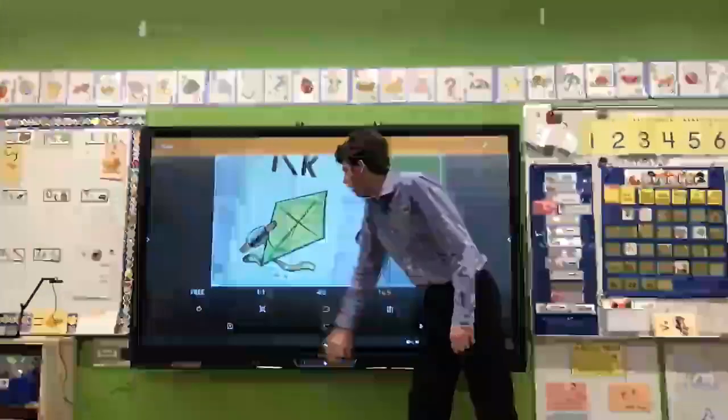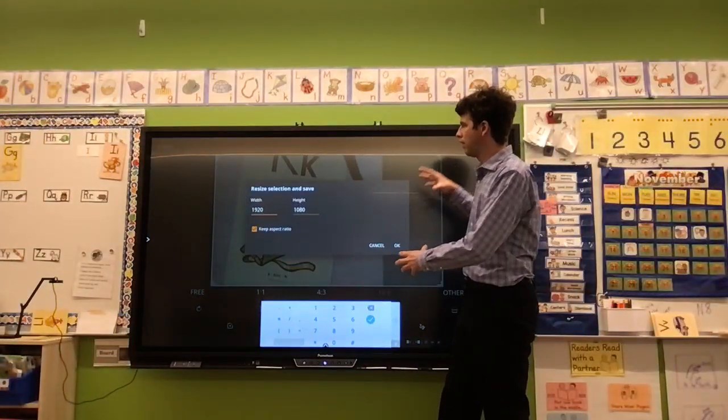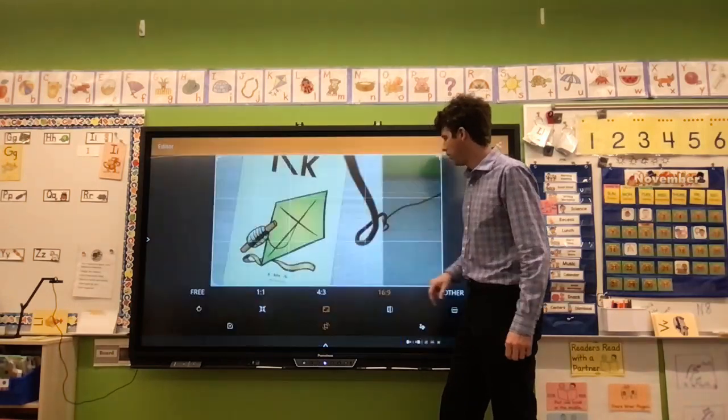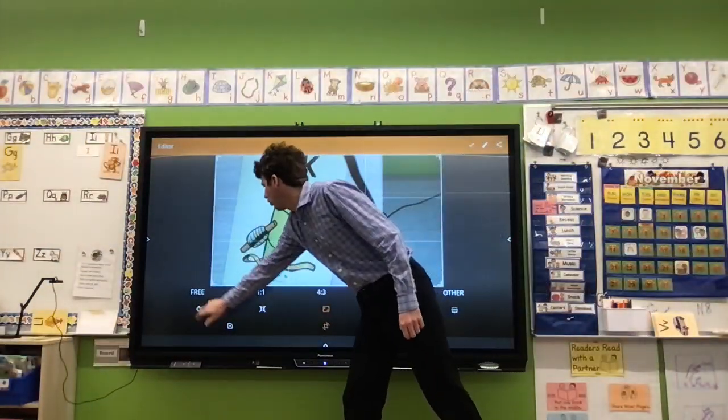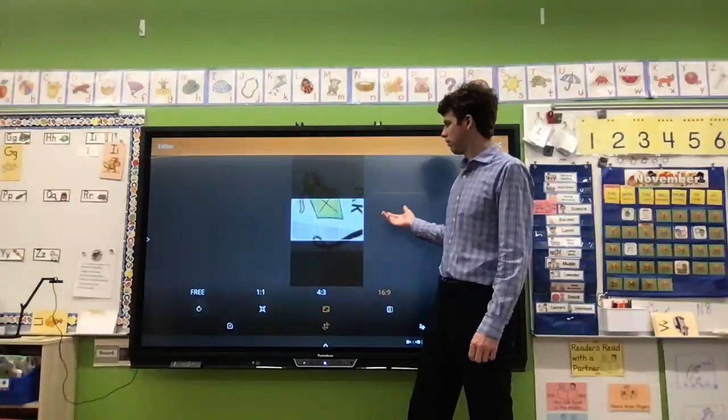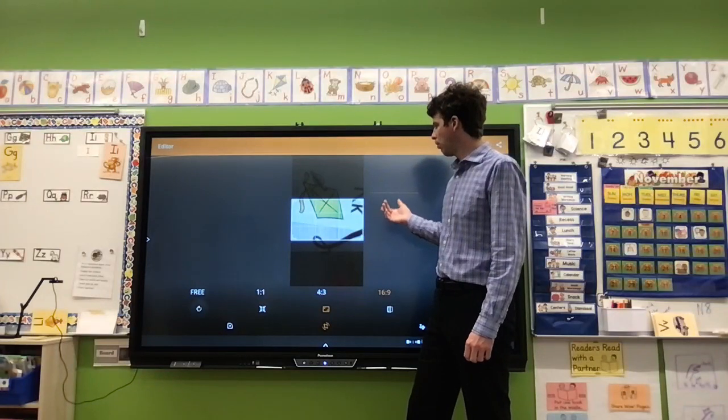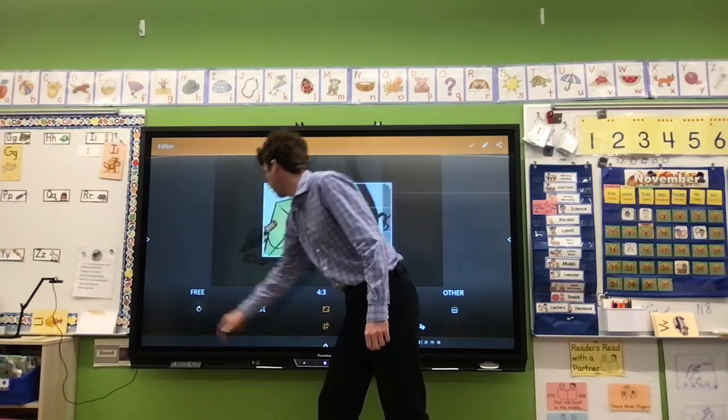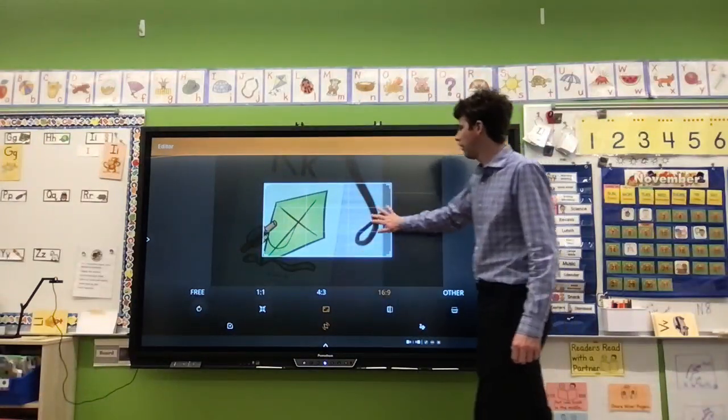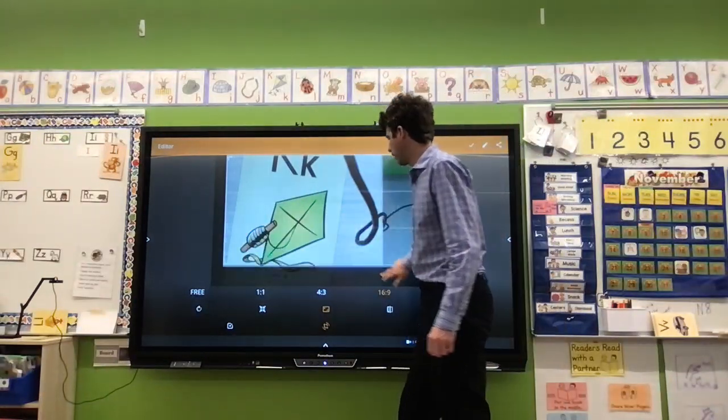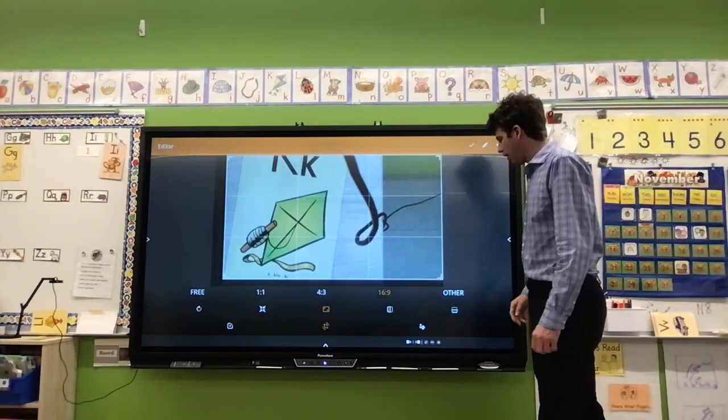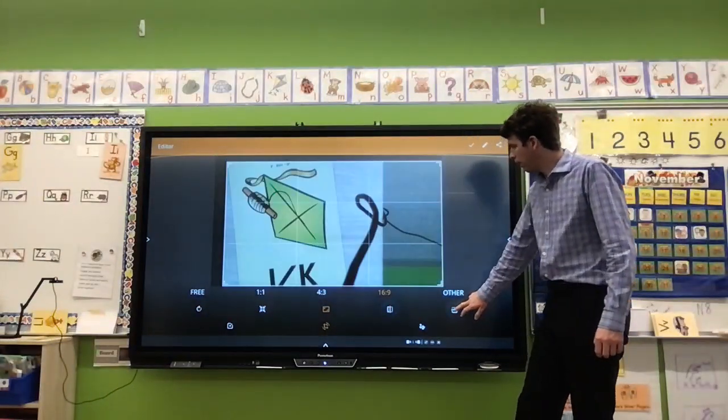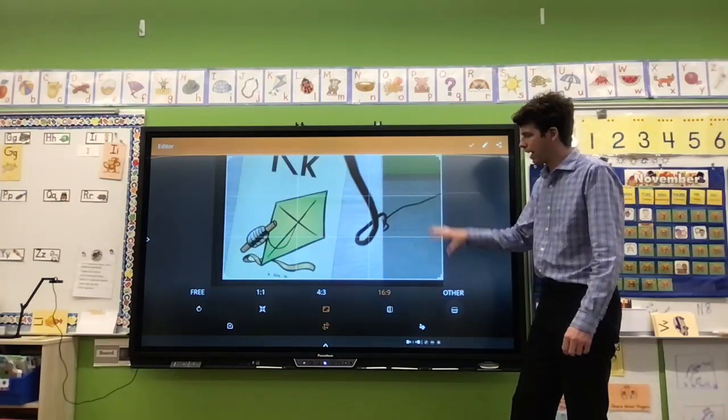You also have the option to resize the aspect ratio here with this button. You can also turn it. So this is where you would go to turn the picture. Again this is after you took it though not while you're using it live. And then we can switch this back to here. And then you can also flip it this way. Or you can flip it this way.